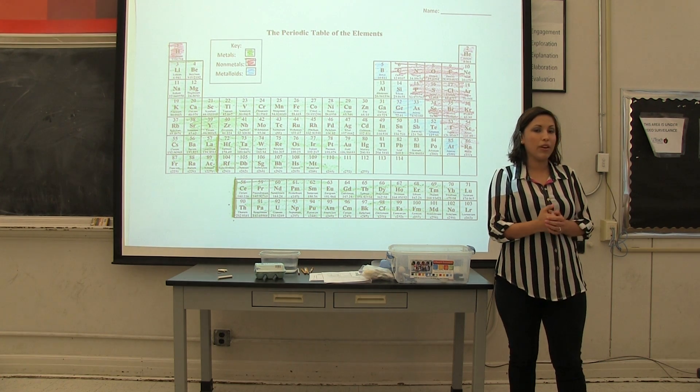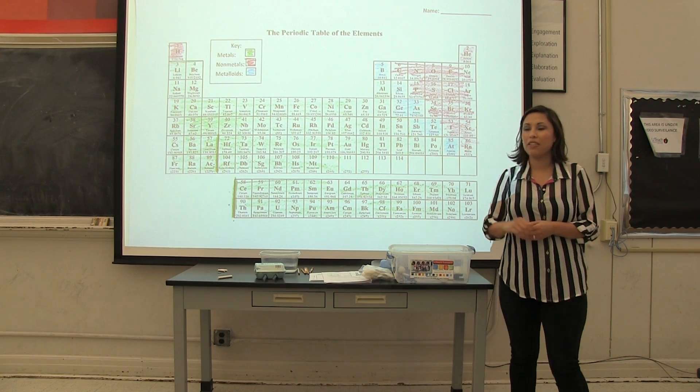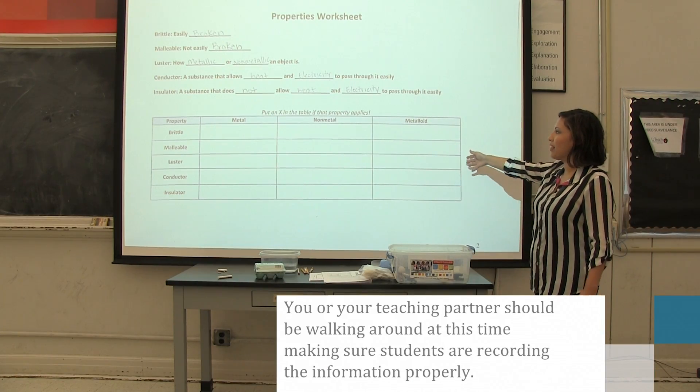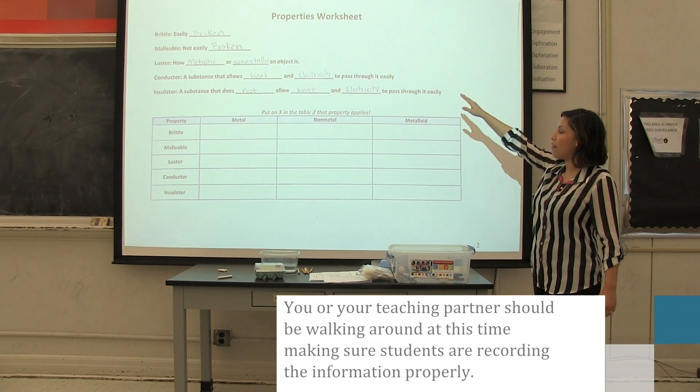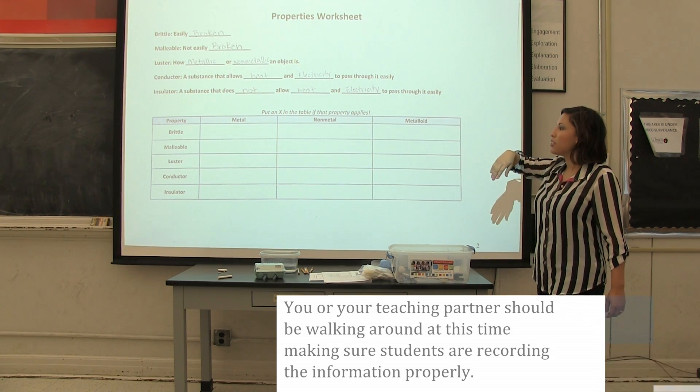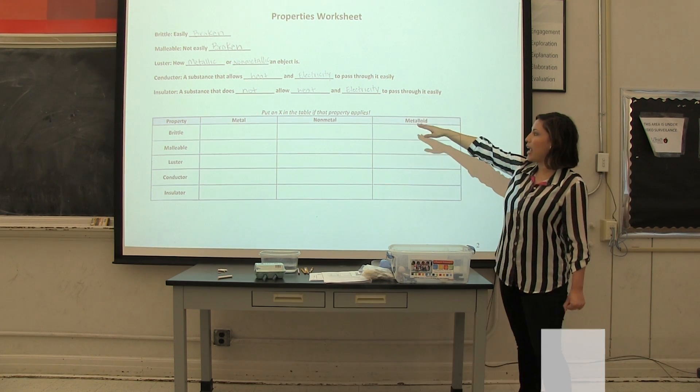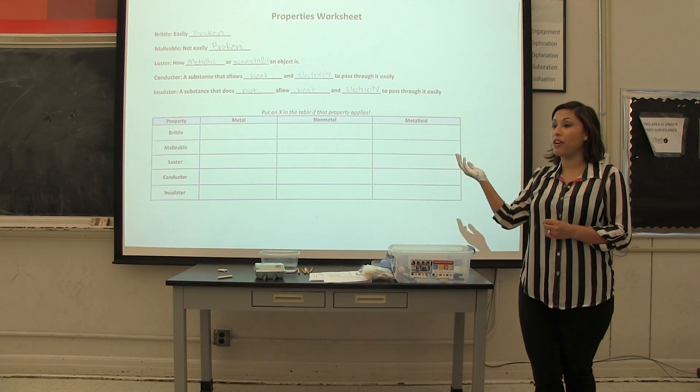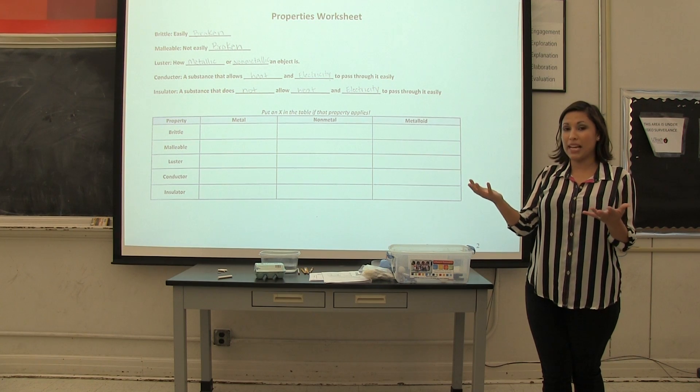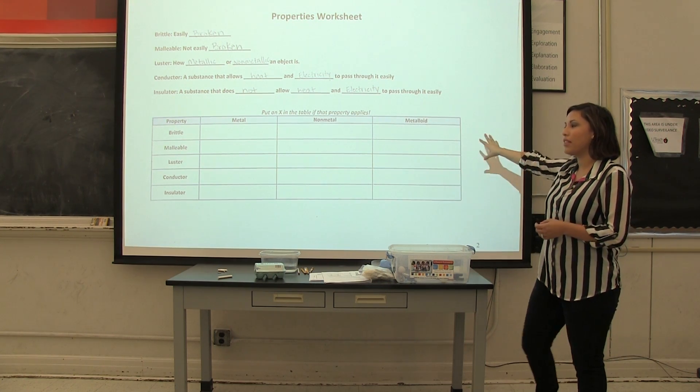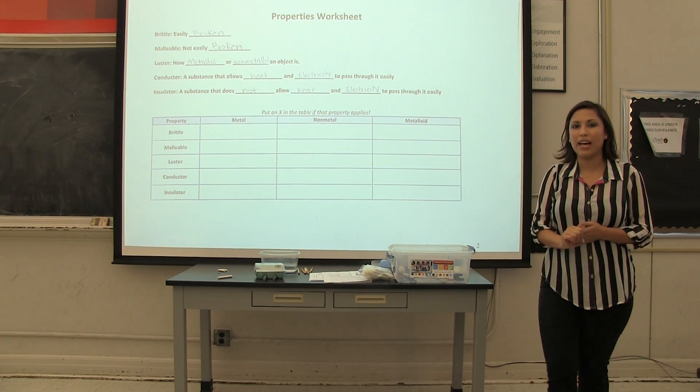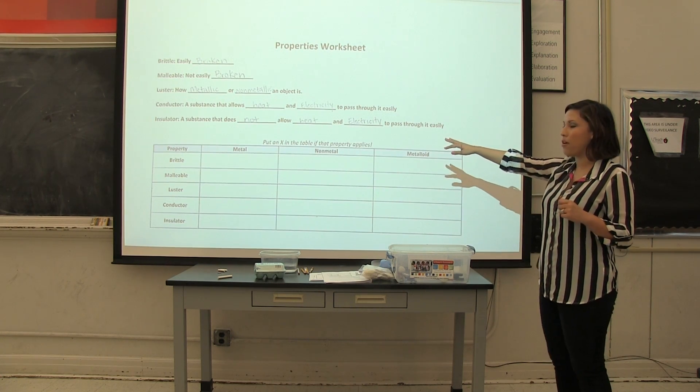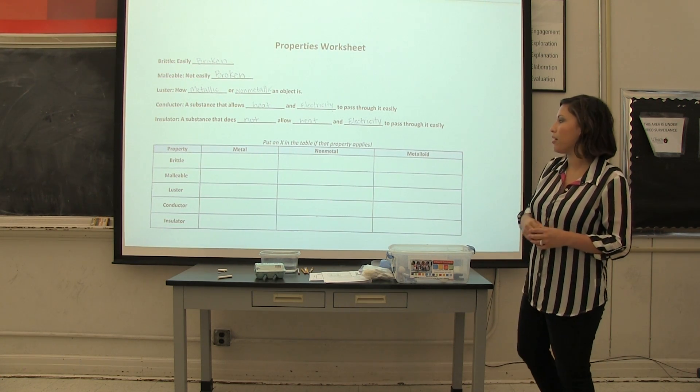So now we're going to go back to the vocabulary worksheet and fill out those last few properties. All right, so now we're going to go back to our data worksheets here under our vocabulary of our properties we talked about. So we're going to put an X on the table if that property applies. Go ahead and take a few minutes and based on your observations of the items we tested, you can go ahead and try to fill out this on your own and then we're going to go over it as a class. All right. So Mr. Pedro is going to go ahead and fill out this as we go over it, and now that you went ahead and worked with your partner.